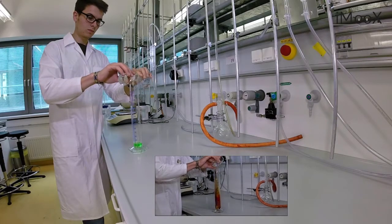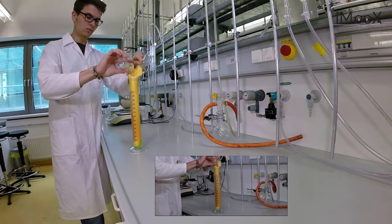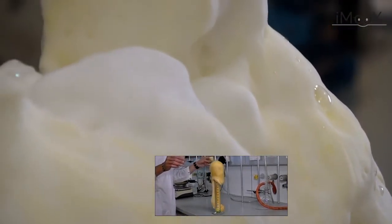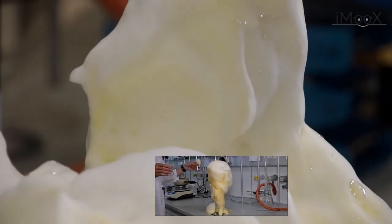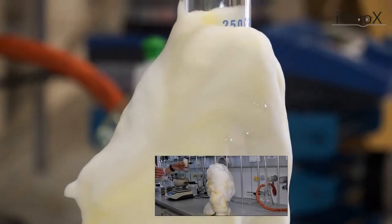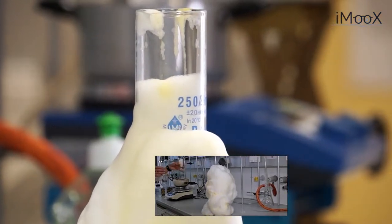In an exothermic reaction, energy is set free in the form of heat or light. In an equation, you could say that the educts react to products plus energy. The educts overcome an activation energy and reach the energetically lower, and therefore preferred, state of the products.